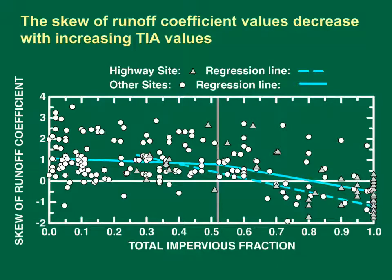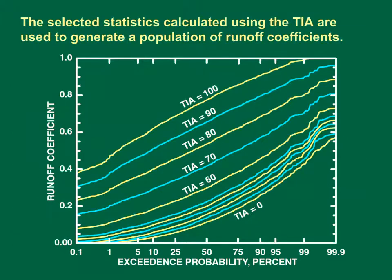This graph shows the coefficient of skew of runoff coefficients on the vertical axis and the impervious fraction on the horizontal axis. The dashed line is the regression relation for highway sites, and the two solid blue lines are the two-segment regression model for non-highway sites, with the breakpoint at an impervious fraction of 0.52. The skew of runoff coefficients decreases with increasing imperviousness. These equations produce negative skews for highway sites above a TIA value of 0.64 and for non-highway sites above a TIA value of 0.81. Negative skews occur at highly impervious sites because there are many storms with high runoff coefficient values but some storms have low runoff coefficients.